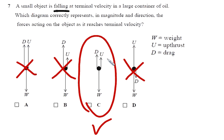Small objects falling at terminal velocity in a large container of oil. Which diagram correctly represents both magnitude and direction of the forces acting on the object as it reaches terminal velocity? Well, the problem with this one is that these two are about the same size as W so there's much more upward force here which can't be true.